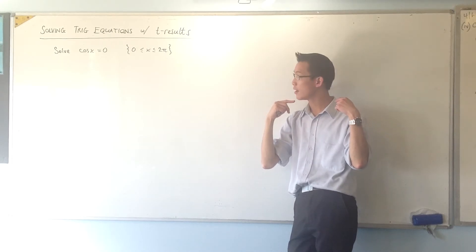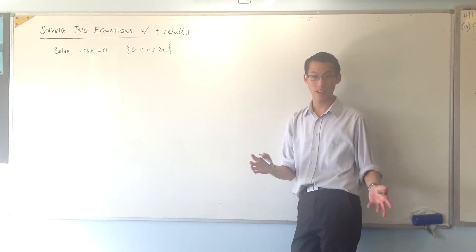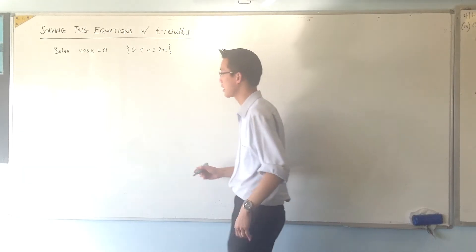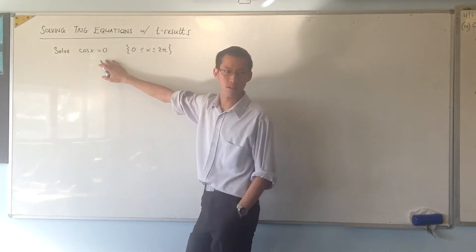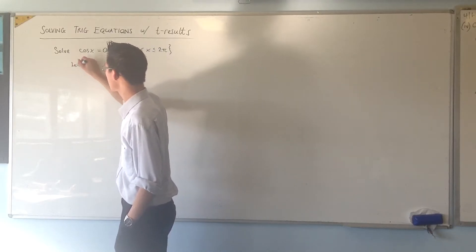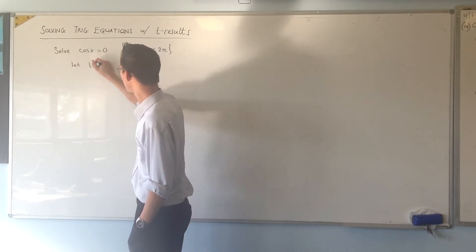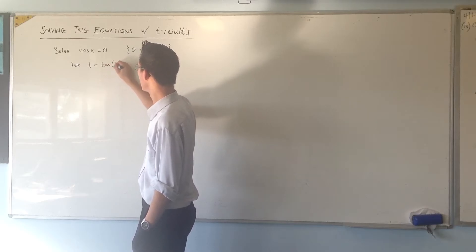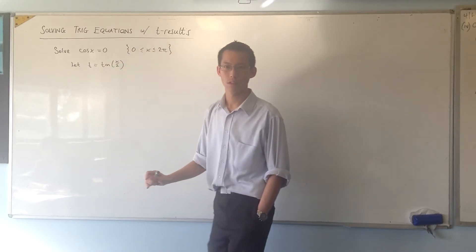We are going to do that in a second. Just file it away in the back of your head. So let's deal with this by T results first and see how it works. So if you want to look at a question that's got no T's in or anything, you have to introduce the T's. So the first thing you say is, let T equals tan of x on 2.